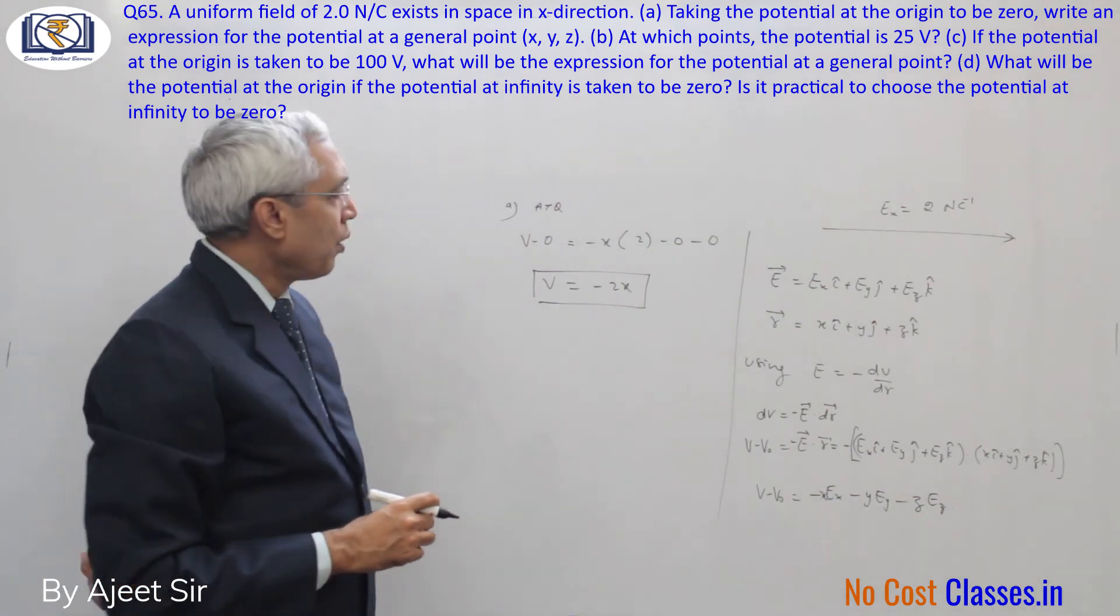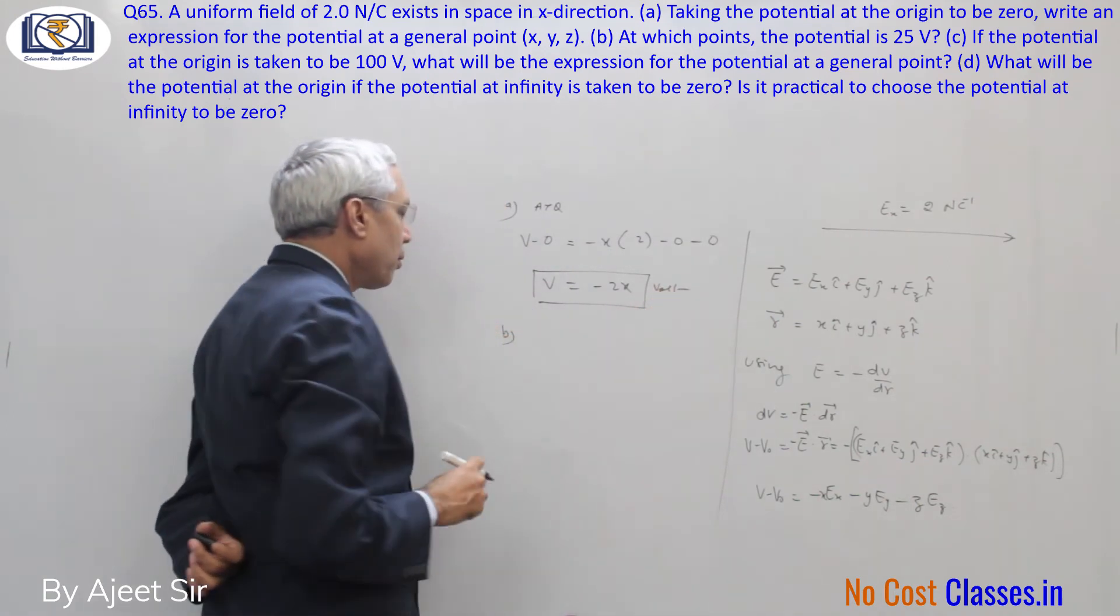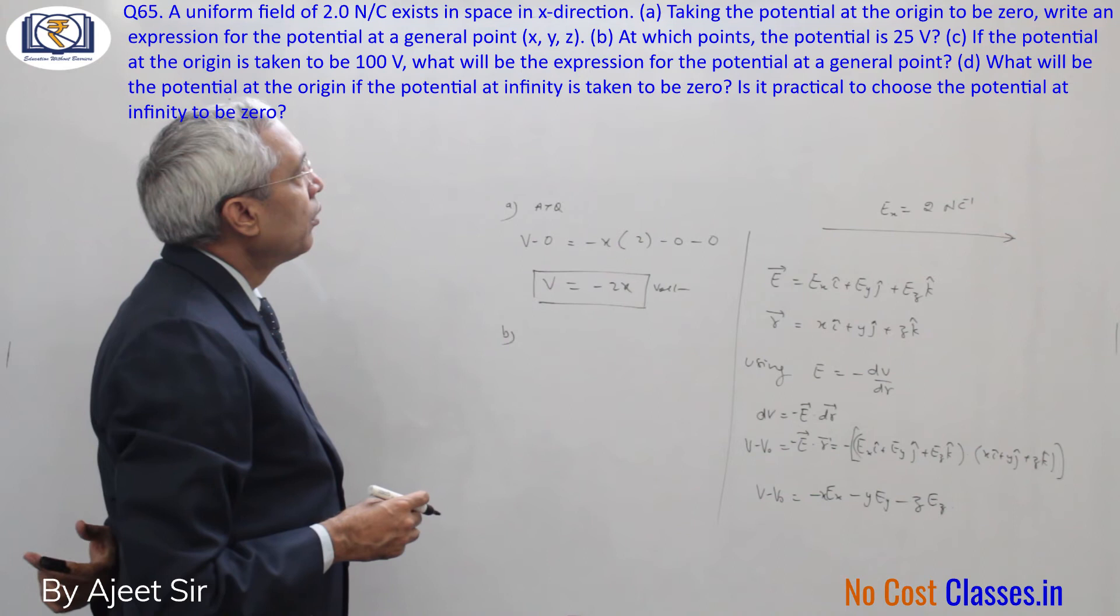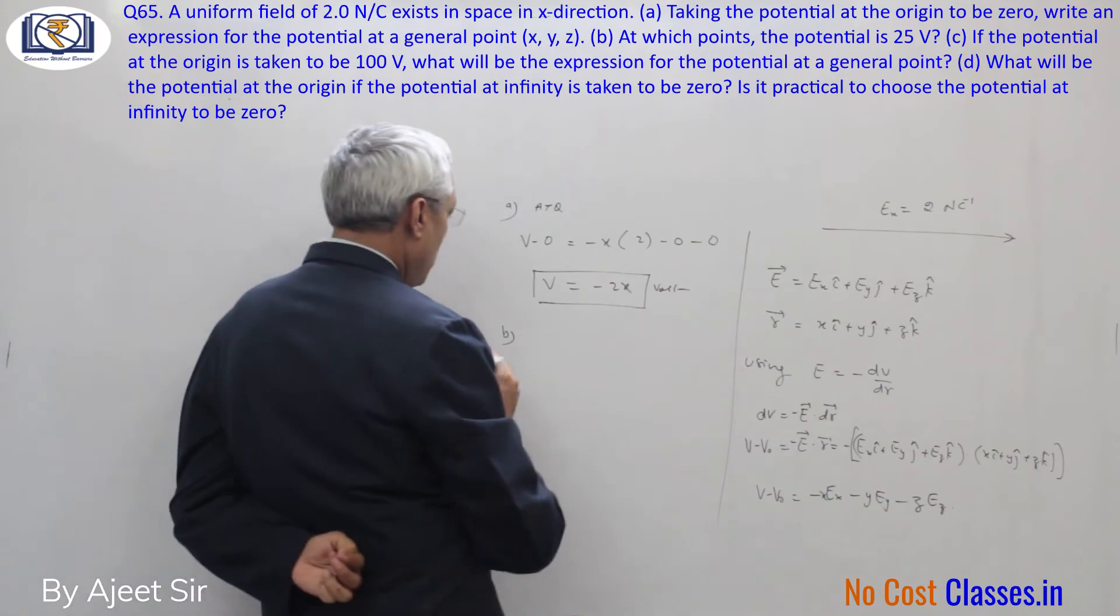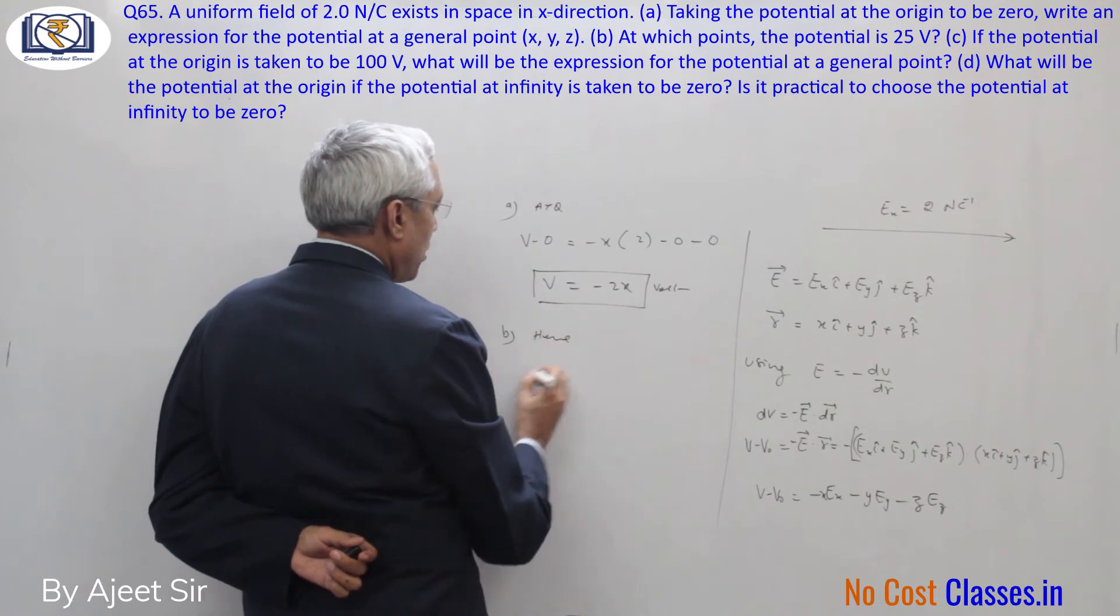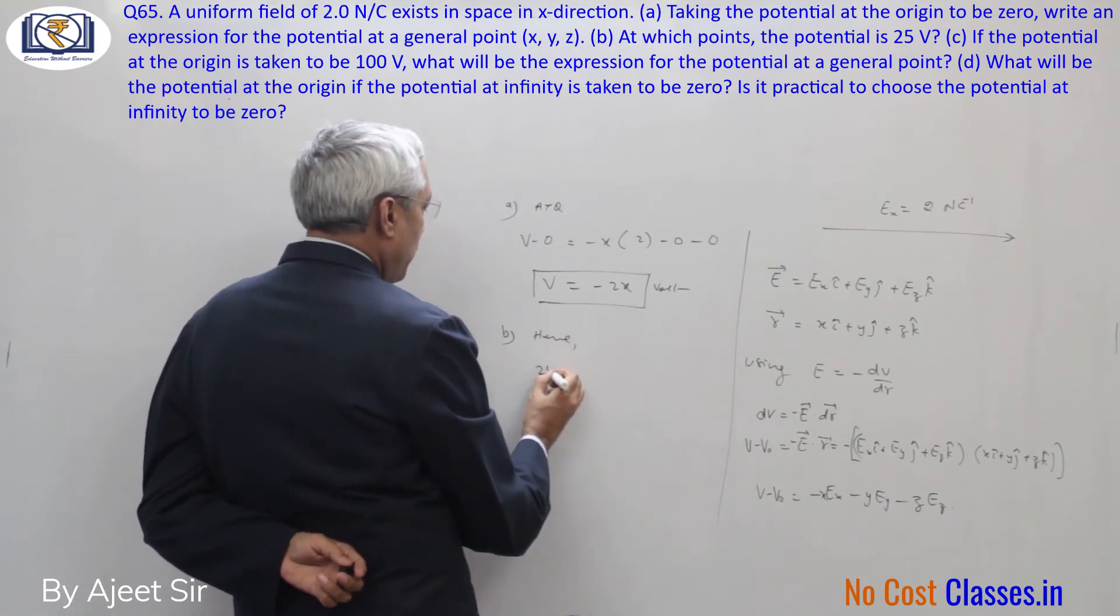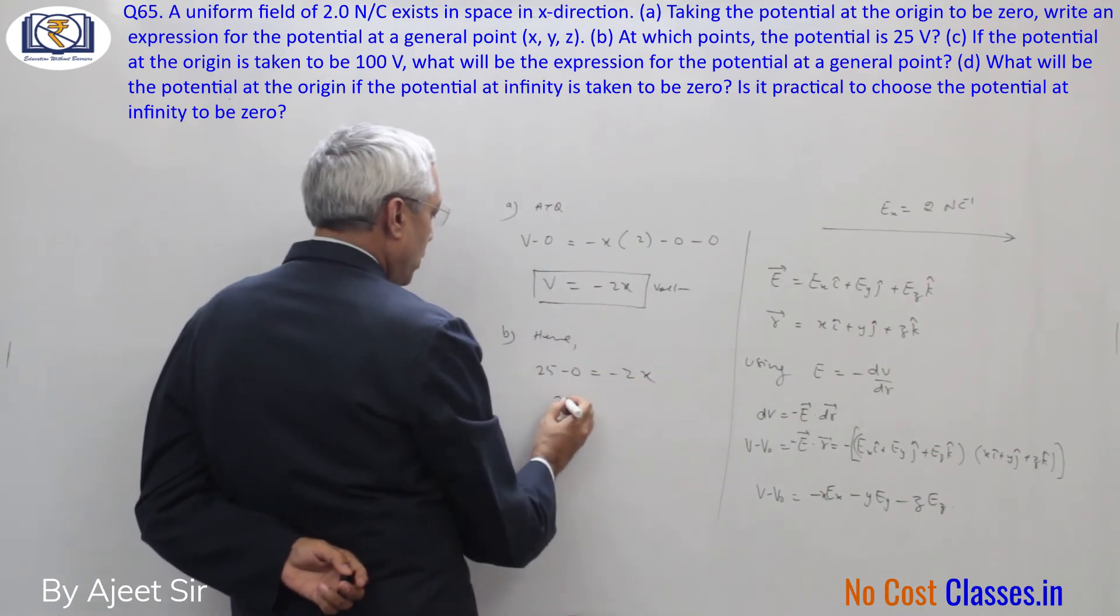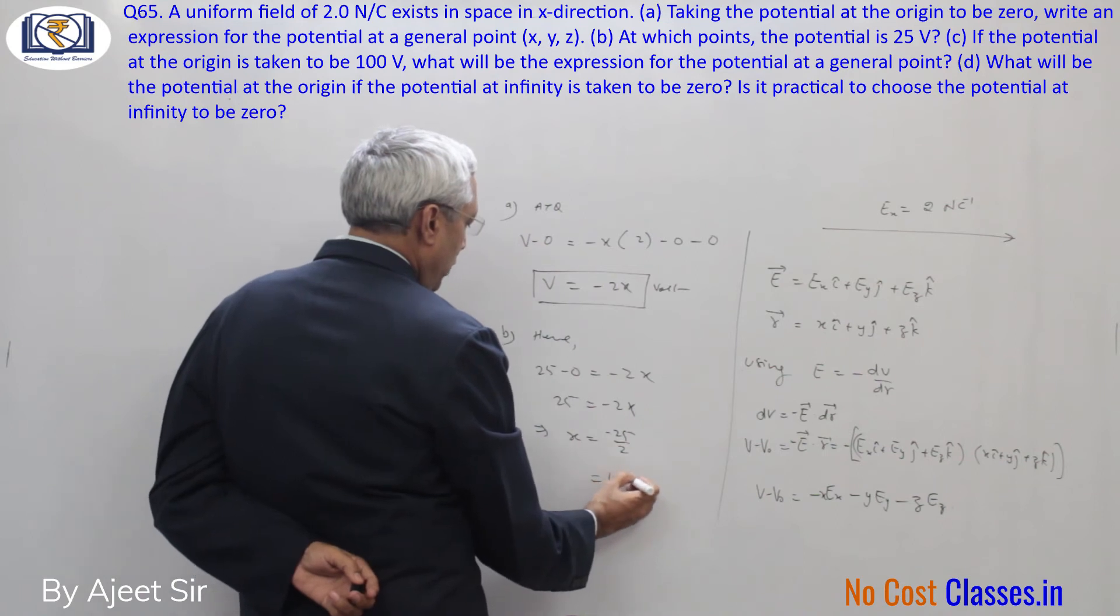Minus 2x will be in volts. And when you see part b, it asks taking potential at origin to be 0, what is the position where potential is 25 volts? Here we have 25 minus 0 equals minus 2x from the general expression. So 25 equals minus 2x, which implies x equals minus 25 by 2, which is minus 12.5 meters.